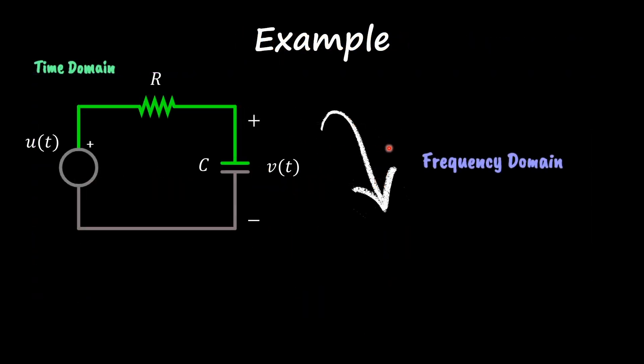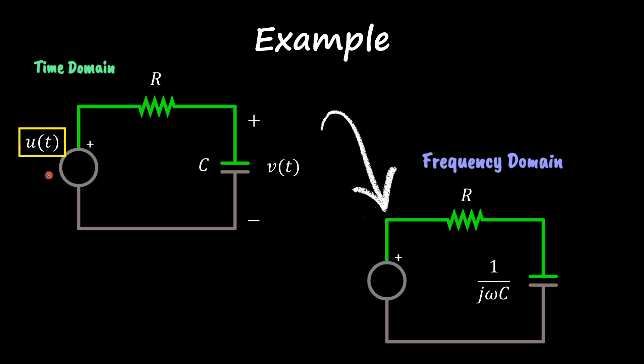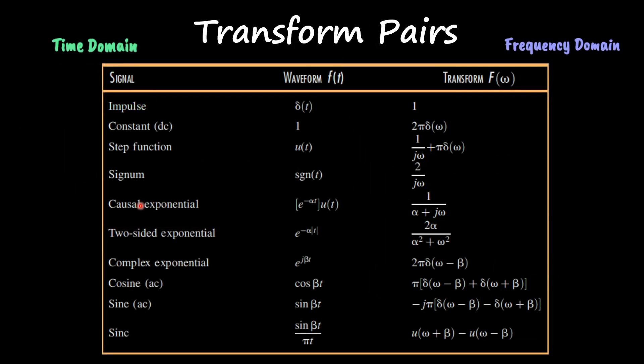Let's do that: R becomes R, C becomes 1/(jωC). Now let's focus on our input. Before, in Laplace, a step would be whatever voltage we had divided by s. But now for the frequency domain, we're going to use what's called the transform pairs, where you have different types of signals that can be present on the input of your circuit and the respective Fourier transform.